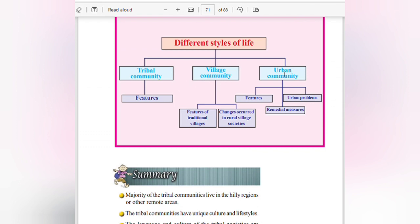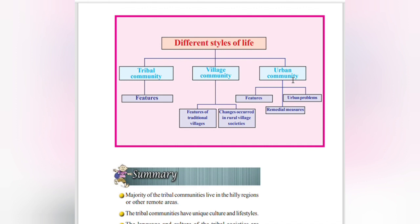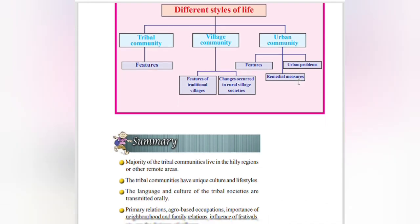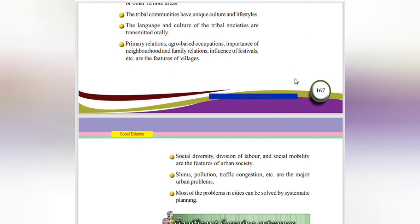To summarize the different styles of life: tribal community, village community, and urban community. The features relating to traditional villages and the changes that occurred in rural village societies — villages are being transformed into urban communities. There are many features of urban life and urban problems, and there are remedies to solve them.